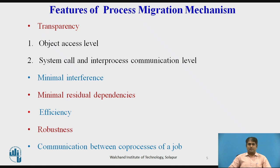Second, system call and inter-process communication level. A migrated process does not continue to depend upon its originating node after being migrated. It is necessary that all system calls, including inter-process communication, are location independent. Thus, transparency at this level must be provided in a system that is to support pre-emptive process migration. However, system calls to request the physical properties of a node need not be location independent.